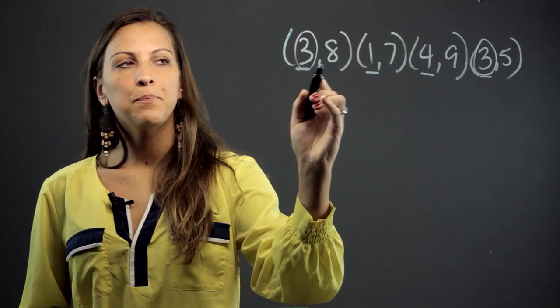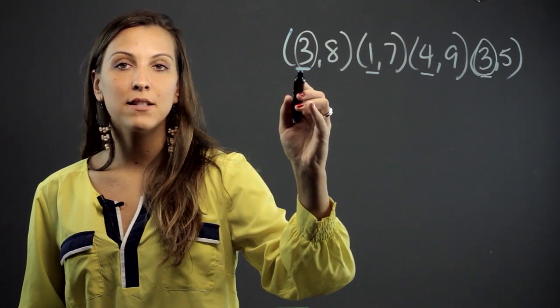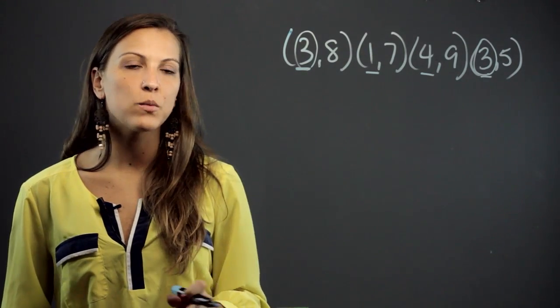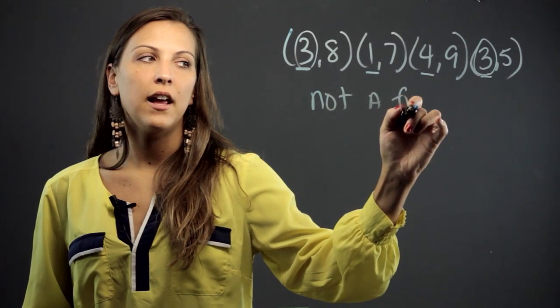See, this three is assigned to an eight, but then it's also later assigned to a five. So the x value three is assigned to two different y values, which means that this relation right here is not a function.